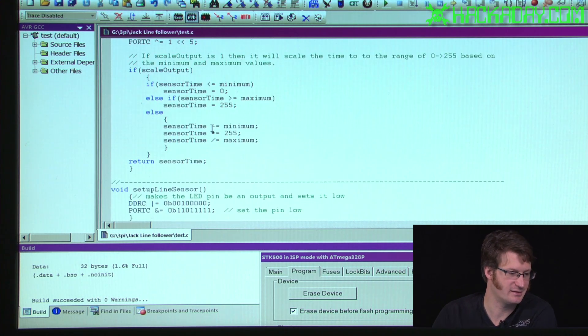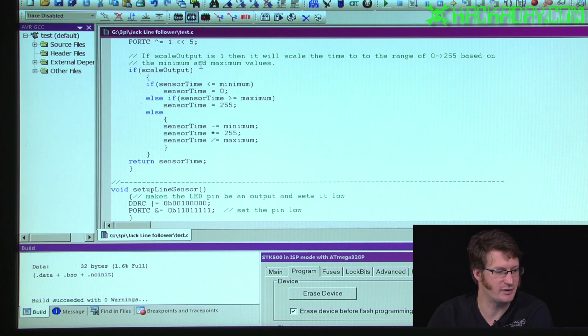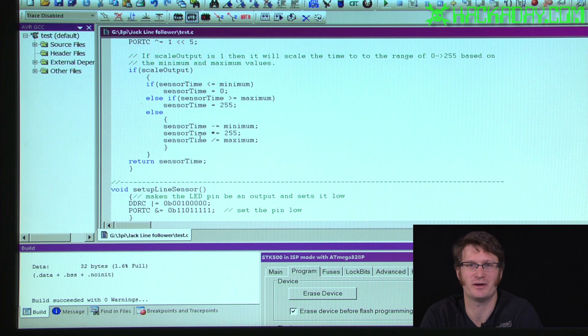Then we turn off the LED. The final thing that we do is if scale output has been selected, if it's anything other than 0, then it will scale the output. I'm just scaling it to a range of 0 to 255. If it's below the minimum, it just makes it 0. And if it's above the maximum, it makes it 255. Because something I've learned from experience is that there will always be exception cases. And so you need to be able to deal with those.